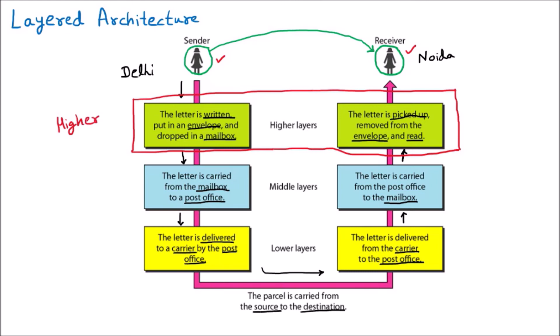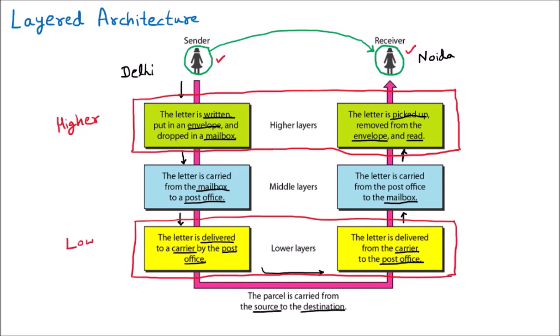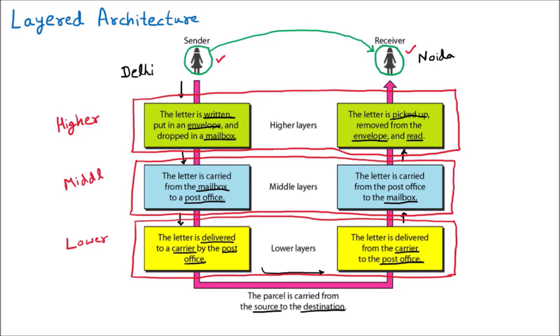There is also a layer at the bottom that interacts with the transmission medium — the wire runs below it — so this is called the lower layer. In between is one more layer that helps the lower and upper layers interact, and that is called the middle layer. All models have these three: lower, middle, and upper layers.